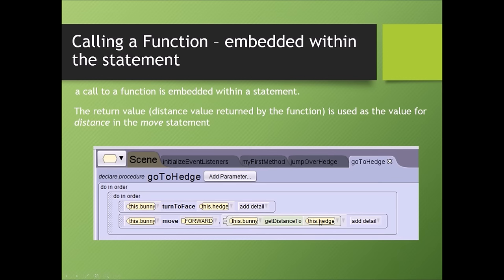This function will get us a number, a decimal number, and we are going to use that number in our move statement. Now get distance to, this number could either be 3.5, 2.5, 1.2, any decimal number.